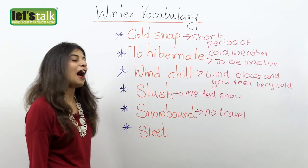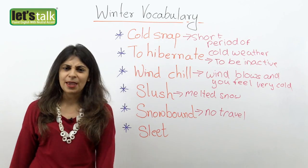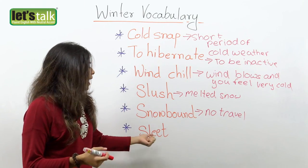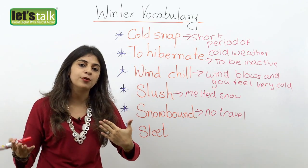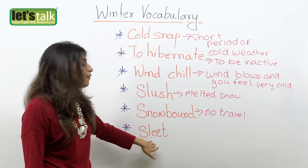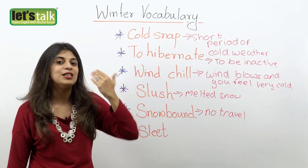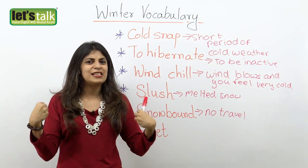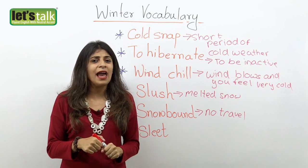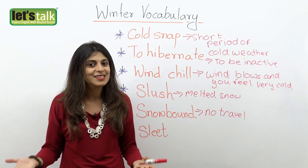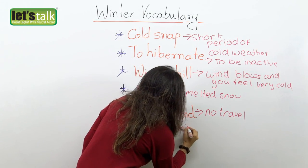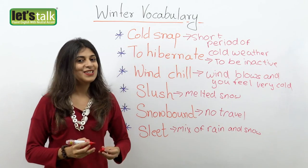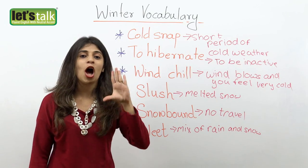The last vocabulary word is sleet. Sleet may be a new word for you. Well, sleet is a mixture of rain and snow. It also means that when it starts raining and because of the cold temperature it turns into ice. So either it's a mix of snow and rain, or when it rains it turns into ice — that is sleet. So if you step out of the house and you feel the rain but it's not really raindrops but you feel ice, then you would say: hey, it's not snow or rain, it's sleet. So these are some words that would help you to talk about winter.